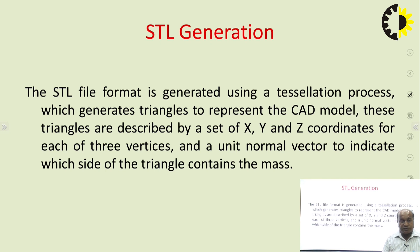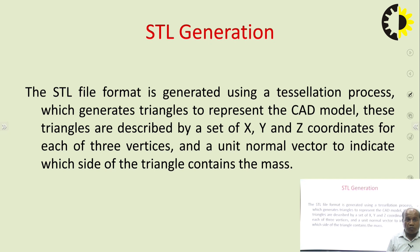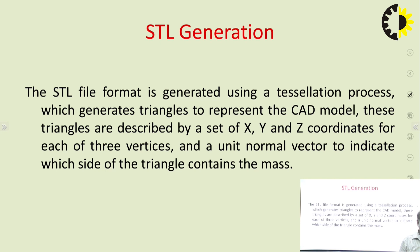How can we generate an STL file? The STL file format is generated using a tessellation process which generates triangles to represent the CAD model. These triangles are described via a set of X, Y, and Z coordinates for each of the three vertices, and a unit normal vector to indicate which side of the triangle contains the mass.